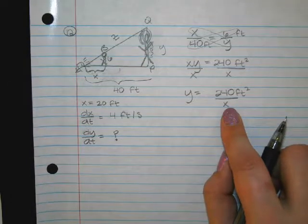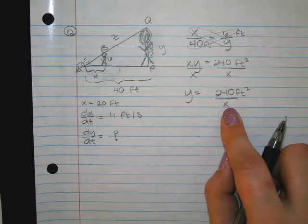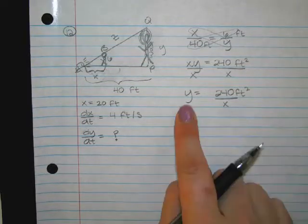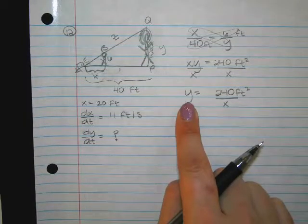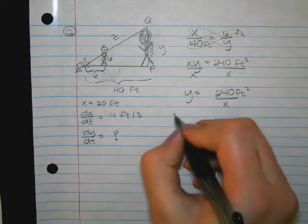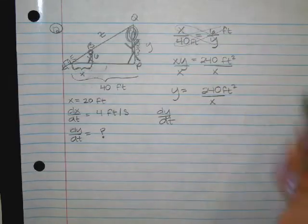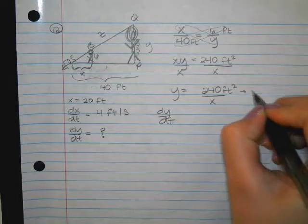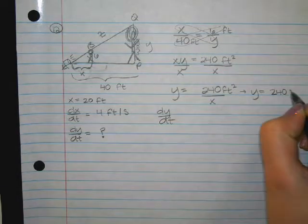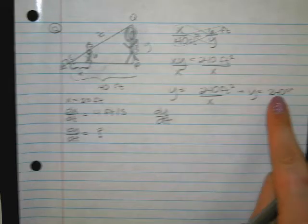Does that make sense how we used a proportion to get here? Okay, so now that we have the formula, what do we always do with our formulas? We take the derivative. So what's the derivative of Y? dy/dt. Okay, now the way this is written right now it's written like a quotient rule.